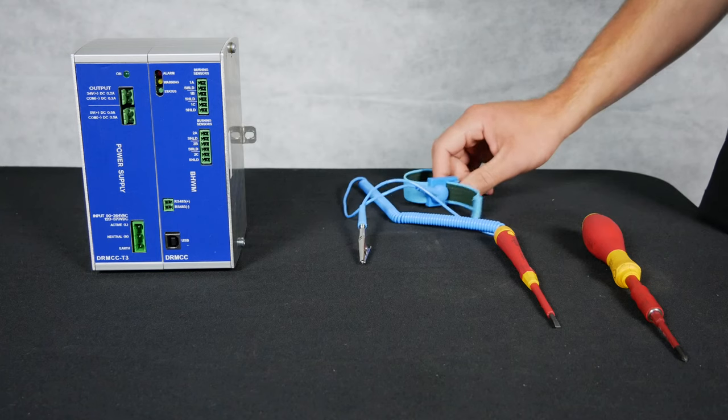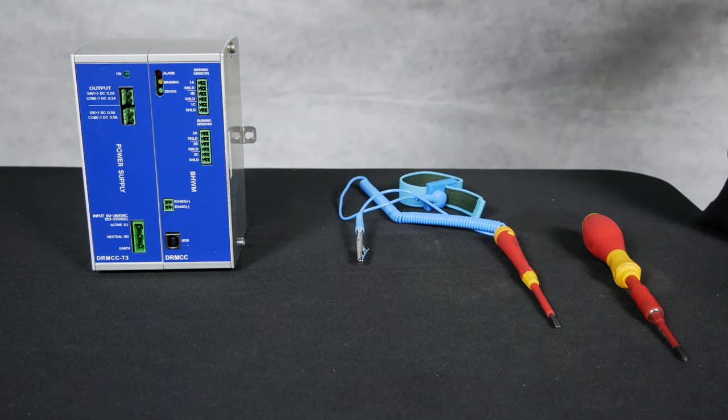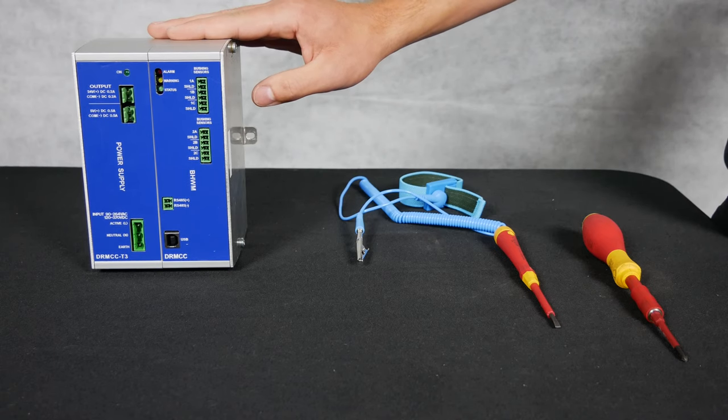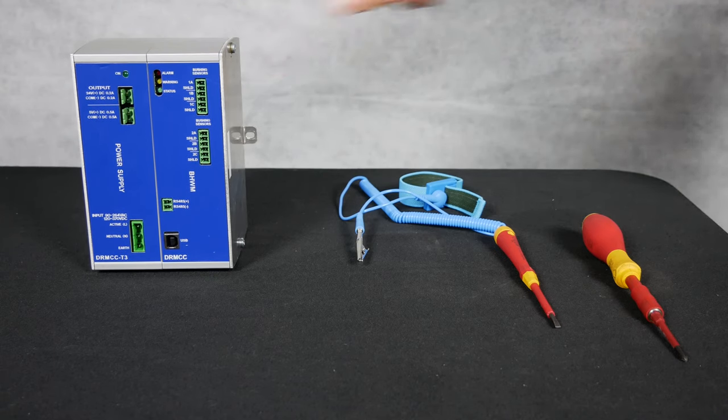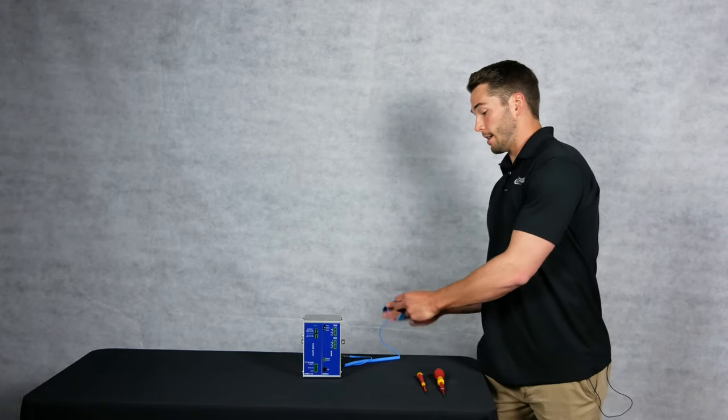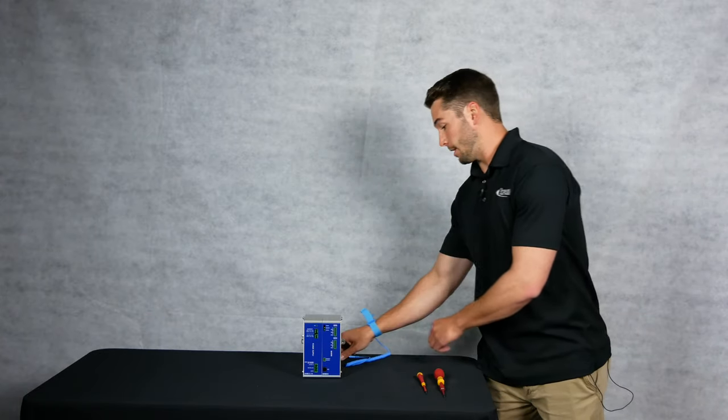If you don't have a static wristband just try and stay in contact with the outer case of the module as much as possible so you don't cause static discharges that might affect the modules. Now first we will put this static wristband on and attach it to the outer casing of the BHM.